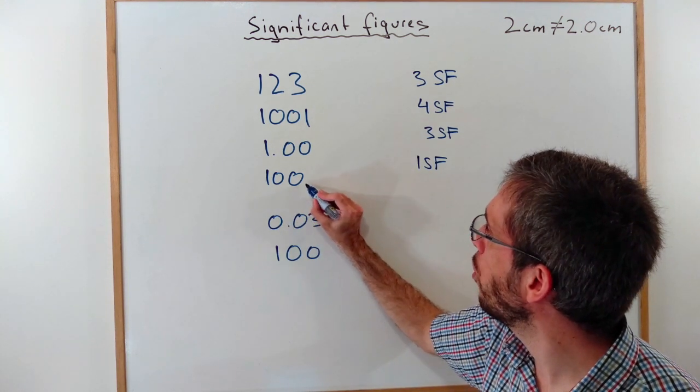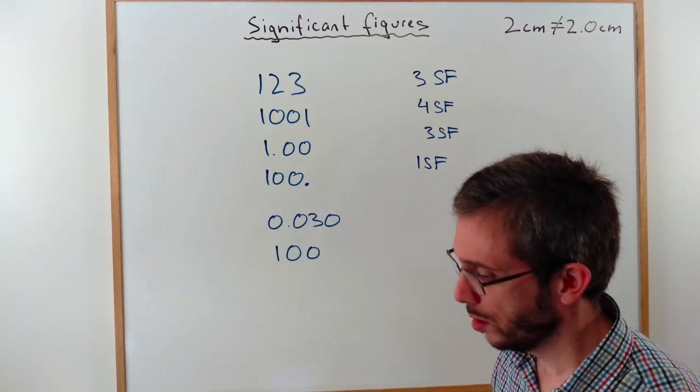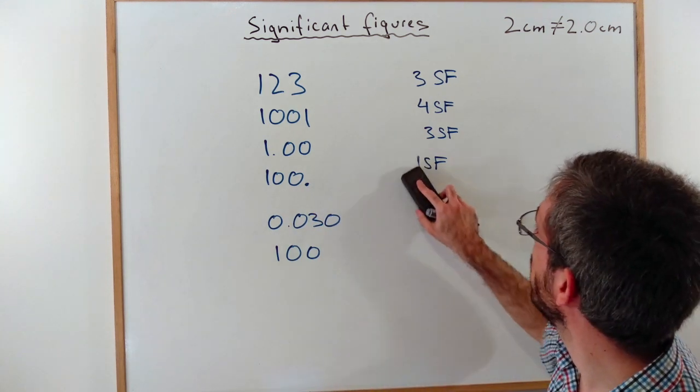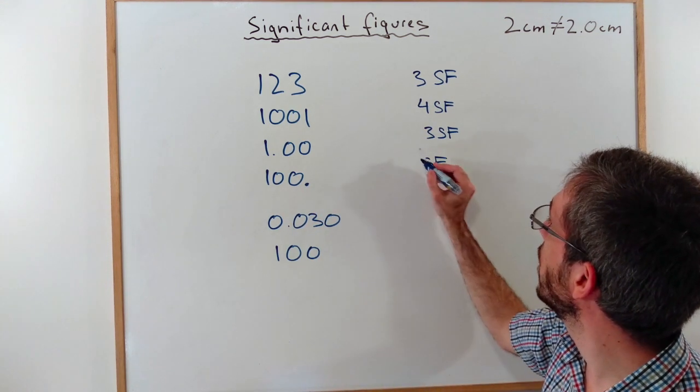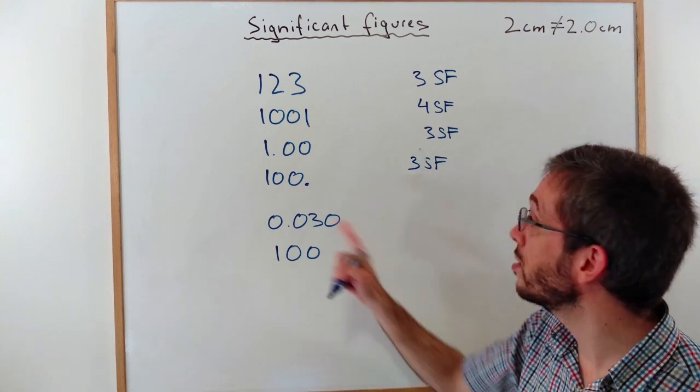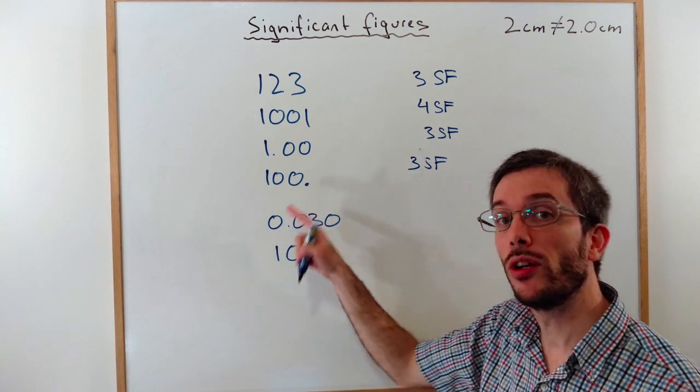If I add a point here, then my zeros actually count and I have a number with 3 significant figures. So there is a difference in writing 100 and writing 100 point.